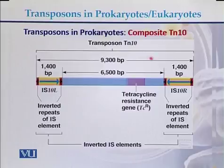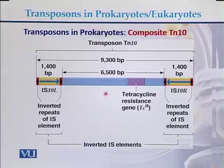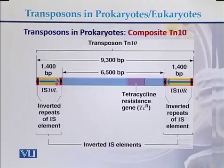An example of a composite transposon is TN10. In TN10, there is a gene for tetracycline resistance in the center and IS elements flanking both ends.